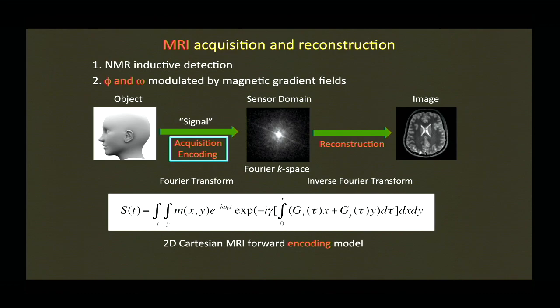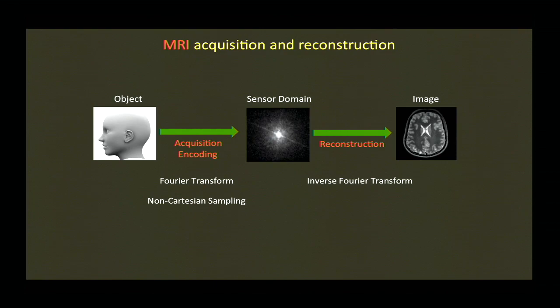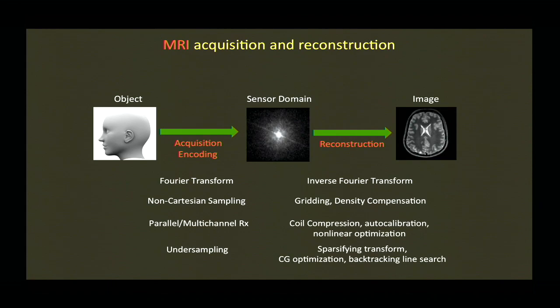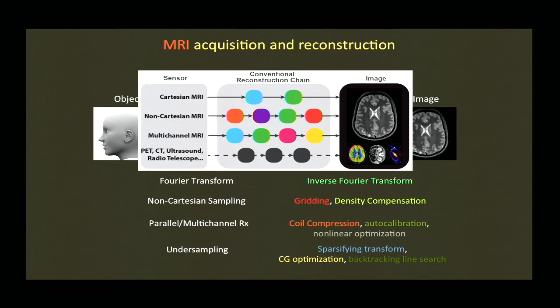There are other things people do: non-Cartesian sampling like spiral (requiring regridding), parallel imaging with coil compression and nonlinear optimizations, undersampled acquisitions using conjugate gradient optimization and compressed sensing. Many of these are iterative, not just analytic inverses. What you end up with, not just in MR but in all imaging, is a kind of zoo — each colored box is someone's career — this ad-hoc pipeline going from raw sensor voltages to the final image.